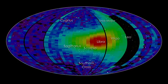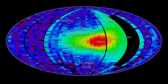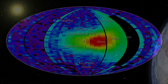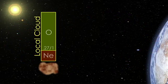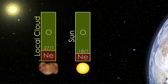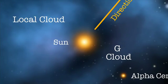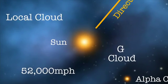IBEX has also measured ENAs from the interstellar wind, giving scientists a clearer picture of its composition. Surprisingly, it turns out that the local interstellar material is different from the sun, and the wind is slower and coming from a different direction than previously thought.